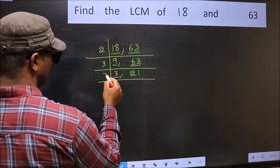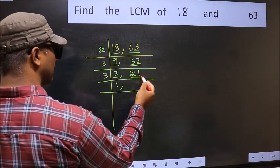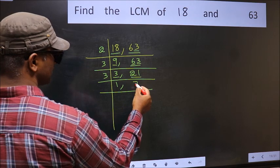Now here we have 3. 3 is the prime number, so 3, 1 is 3. The other number 21. When do we get 21 in 3 table? 3, 7 is 21.